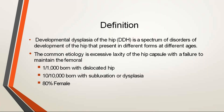The definition of developmental dysplasia of the hip: it is a spectrum of disorders of development of the hip that presents in different forms. That is, the hip may be dislocated, dislocatable, or subluxated. The different terms will be dealt with in the next slide.